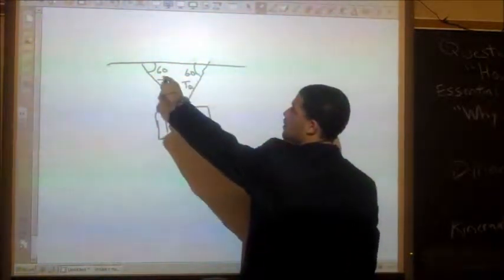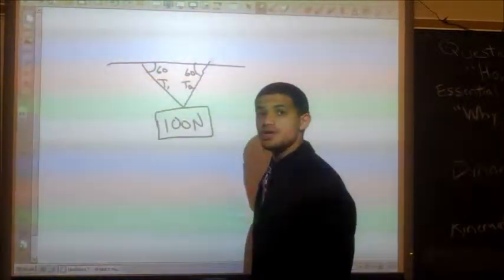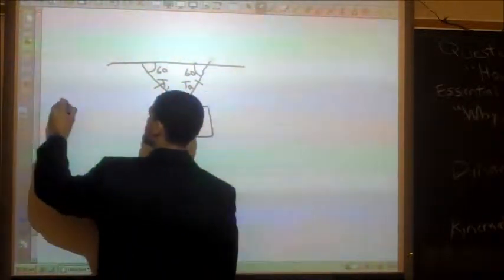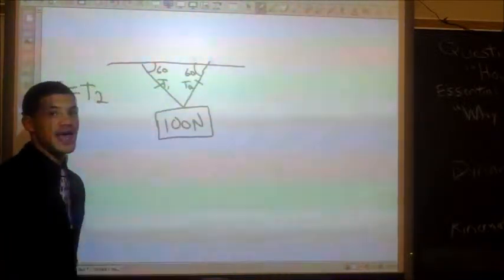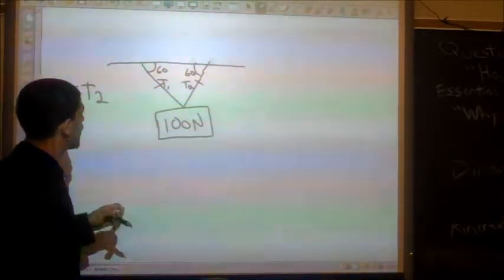Since we have a triangle with equal bases, we know that the sides are equal, which means that t1 equals t2, because we know the base angles are also equal. And with that, we can actually move on.